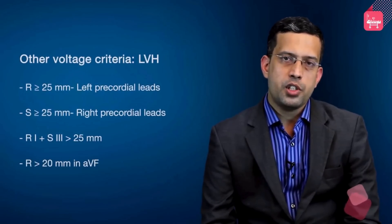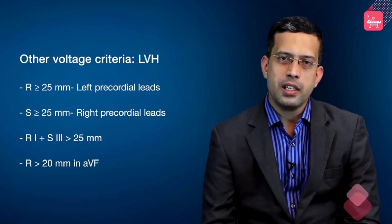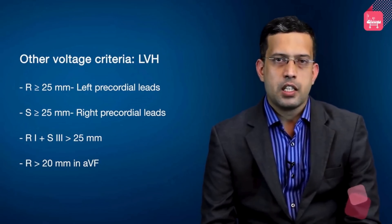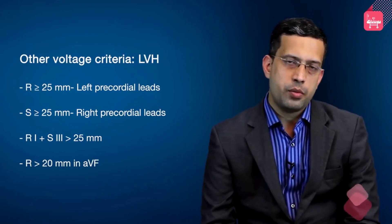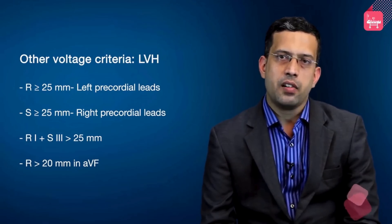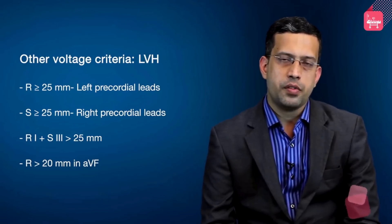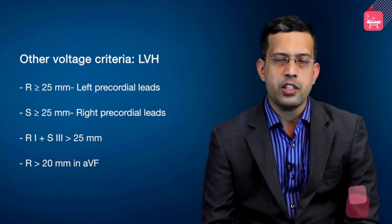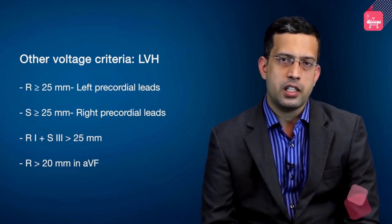The Cornell voltage duration product is sometimes considered one of the best voltage indices because it has the best combination of sensitivity and specificity among the voltage criteria. Other voltage criteria for LVH include R in left precordial leads exceeding 25 mm, S in a right precordial lead exceeding 25 mm, R in lead I plus S in lead III exceeding 25 mm, or an isolated R in lead AVF exceeding 20 mm — all reflecting the increased muscle mass.